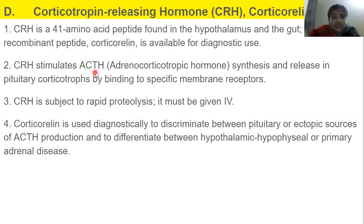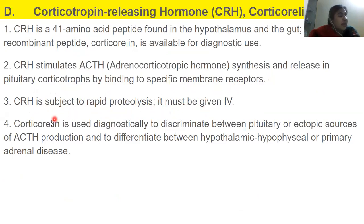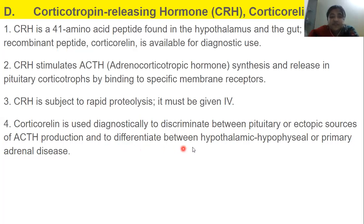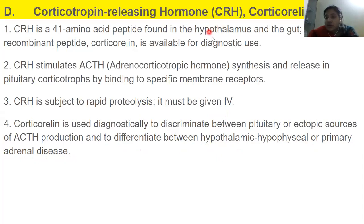CRH is subject to rapid proteolysis and must be given IV because it undergoes rapid degradation. Corticorelin is used diagnostically to discriminate between pituitary or ectopic sources of ACTH production and to differentiate between hypothalamic-hypophysial or primary adrenal disease. This point will be discussed more in upcoming slides covering corticotropic hormones.